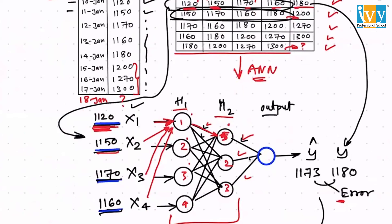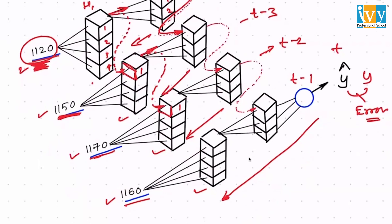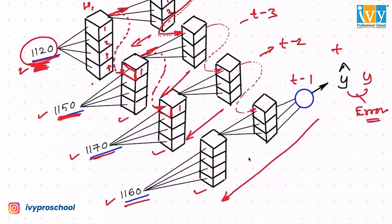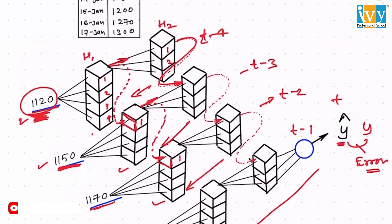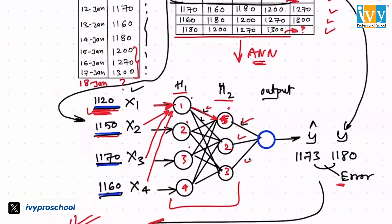In RNNs or LSTMs, neurons also listen to what they produced in previous time steps. Neuron number one will understand what it produced while learning the value 1120, then the same neuron will also understand: in the previous time step I learned 1150, so how is that output affecting 1170? Every input essentially learns the interdependencies with each other before learning against the target variable — enabling better learning of dependencies compared to normal ANNs, which assume independent predictors.